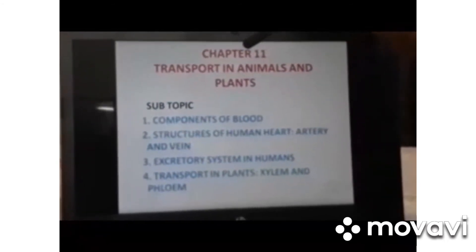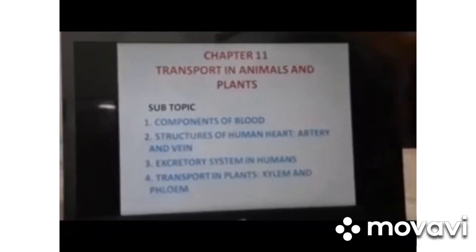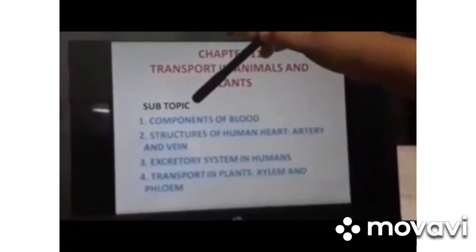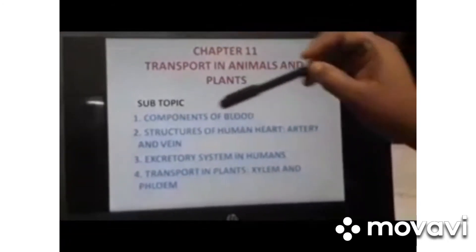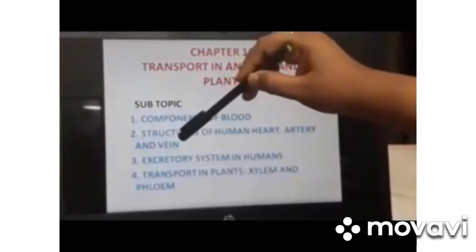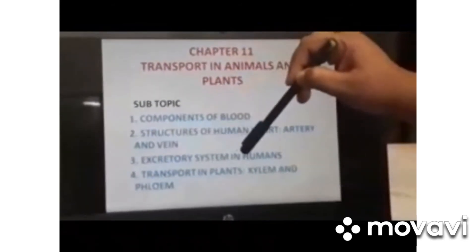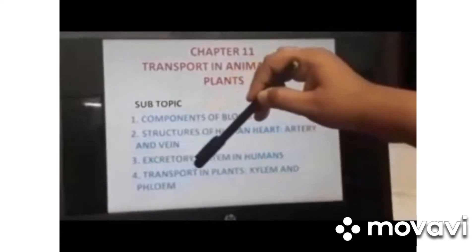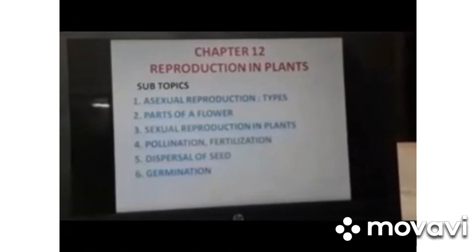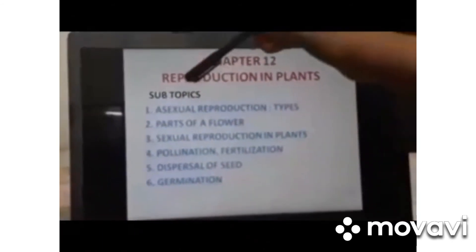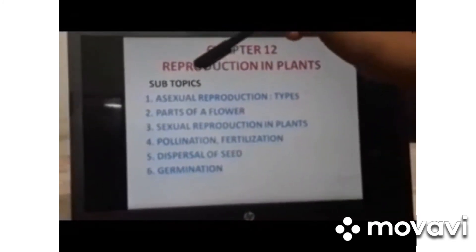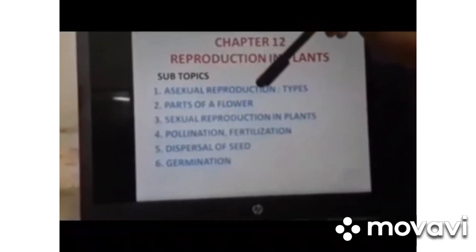Next we are moving to Chapter 11, that is Transport in Animals and Plants. The subtopics are Components of Blood, Structure of Human Heart, Artery and Vein, Excretory System in Humans, Transport in Plants, Xylem and Phloem.